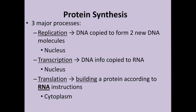There are three important processes involved in protein synthesis: replication, transcription, and translation. Replication and transcription occur in the nucleus, whereas translation occurs in the cytoplasm. In replication, two DNA molecules are obtained from the parental DNA. In transcription, the genetic information of DNA is copied to mRNA, which is useful for protein synthesis, and this also occurs in the nucleus.